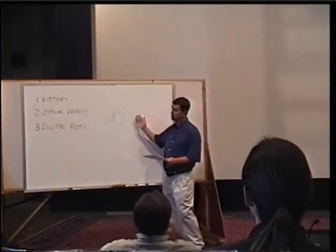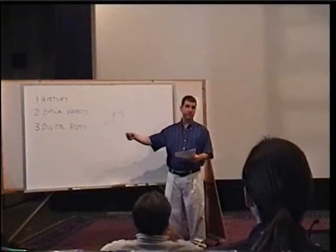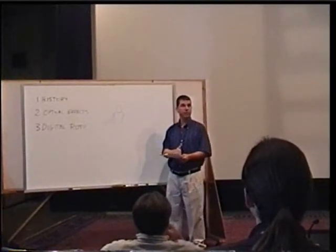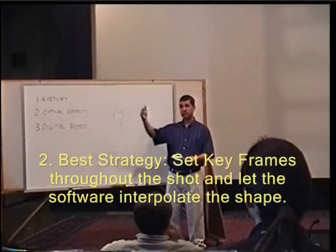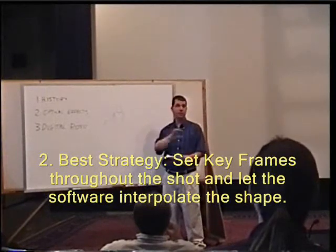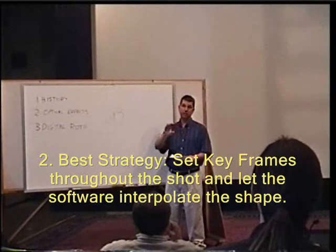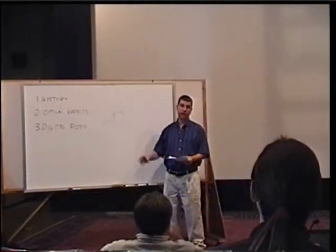Most, all rotoscoping systems have interpolation between keyframes, so what you want to try and do is set keyframes throughout the shot, and then use the system, interpolate your shape as it moves through the shot.